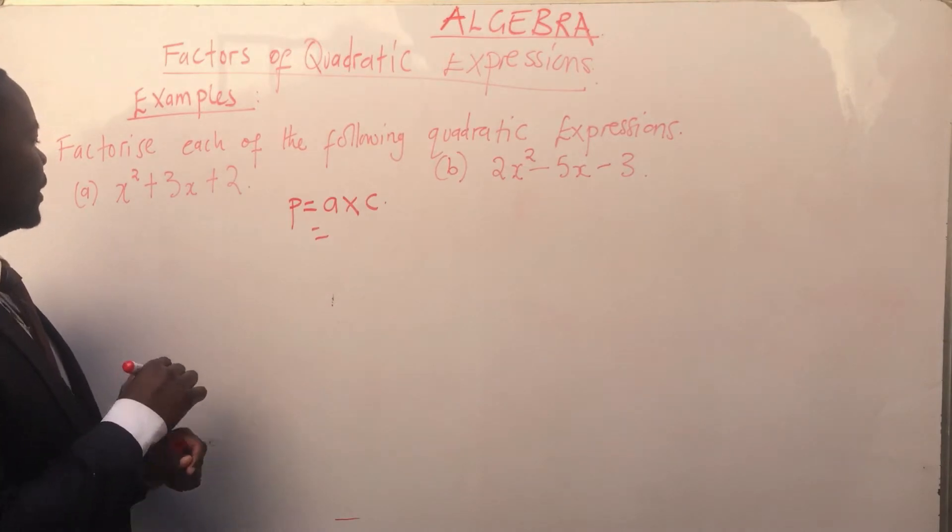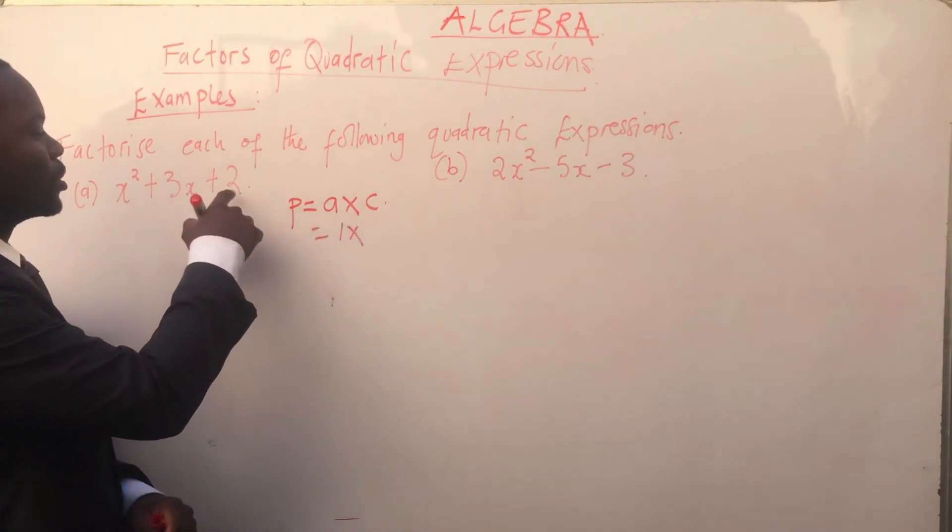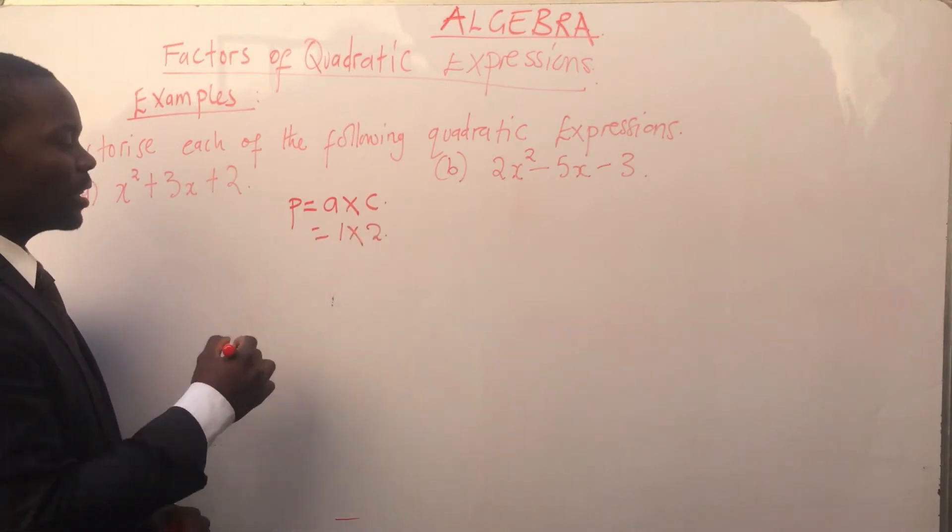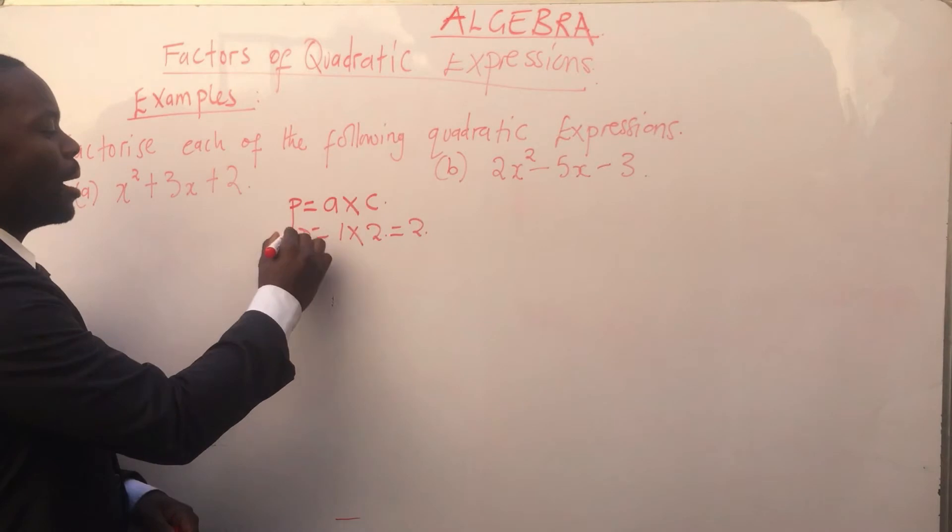In this case, what is our a? It's 1. And our c? It's 2. Therefore, 1 times 2 is 2. So this is our product.